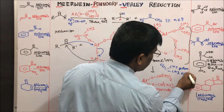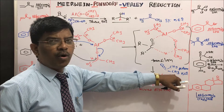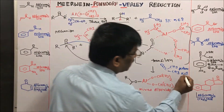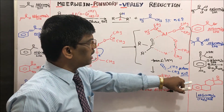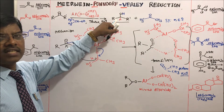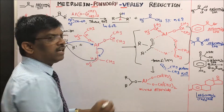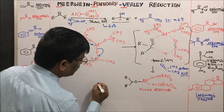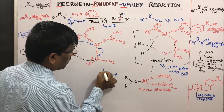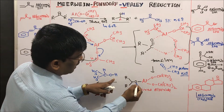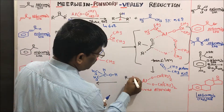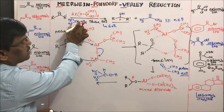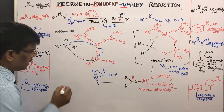The mixed alkoxide is intact while the isopropoxide leaves as acetone. Acetone, with a boiling point of 56°C, must be removed because it can interact with the reagent and slow the reaction. Because of its low boiling point, it is easily removed at the reaction temperature of 50–60°C by distillation. The mixed alkoxide then takes up a proton from isopropyl alcohol, with the alcoholic OH being transferred.